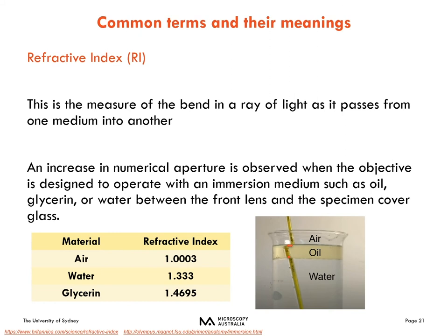The refractive index is a measure of how much a light ray bends when it moves from one medium into another — easily seen when you pop a pencil into a glass of water and it appears to shift. For air the refractive index is close to one. More dense materials such as water and glycerin have a higher refractive index and can assist in increasing the numerical aperture of objectives designed to be used with these materials.